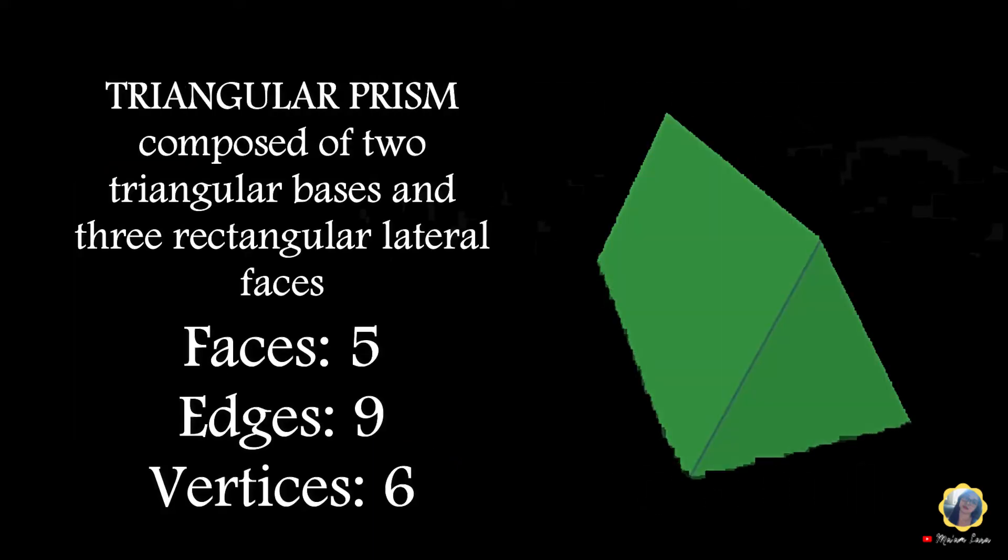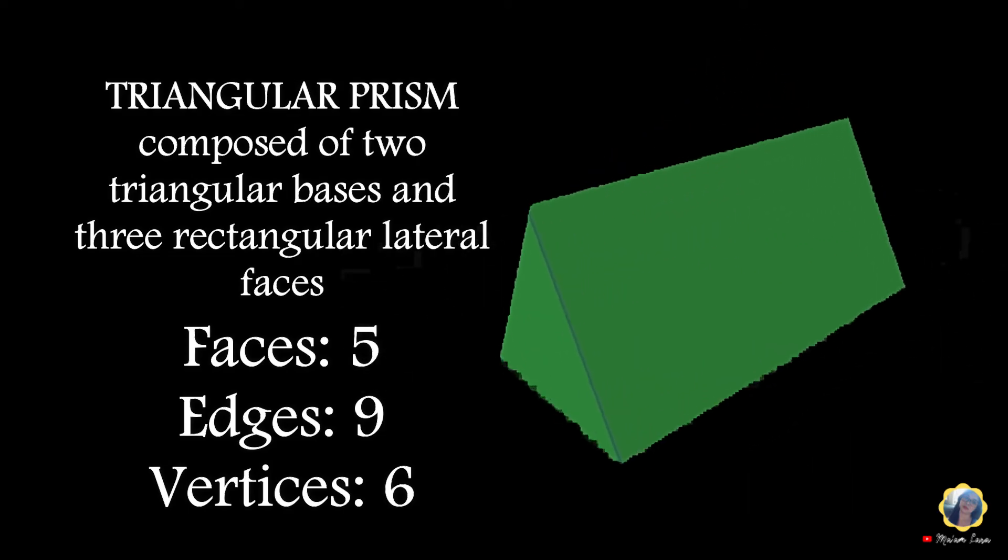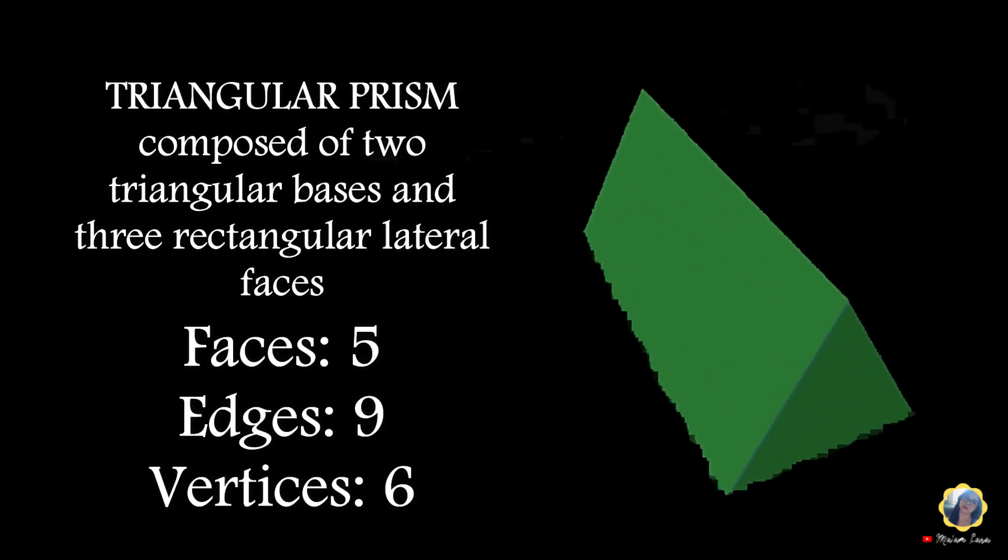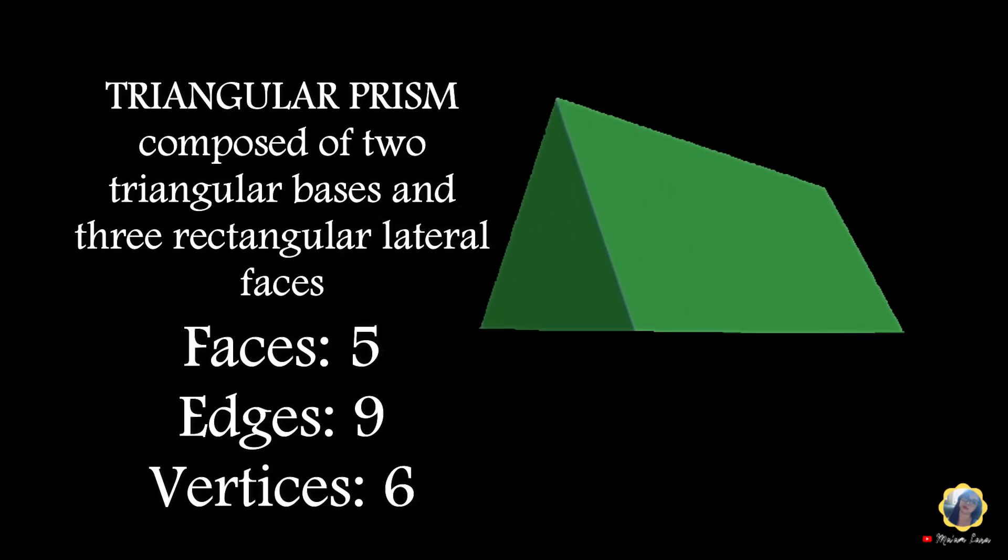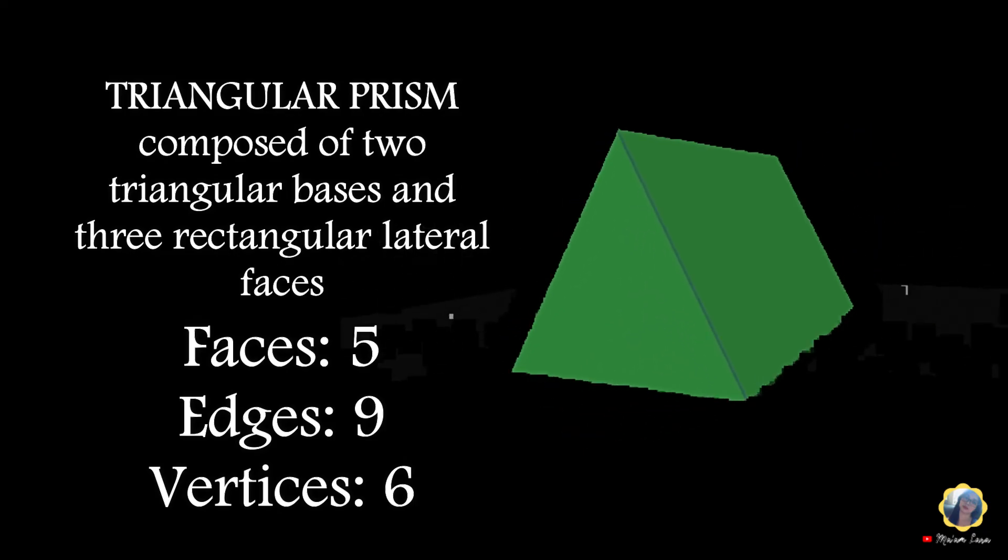Triangular prism: composed of two triangular bases and three rectangular lateral faces. Faces: 5. Edges: 9. Vertices: 6.